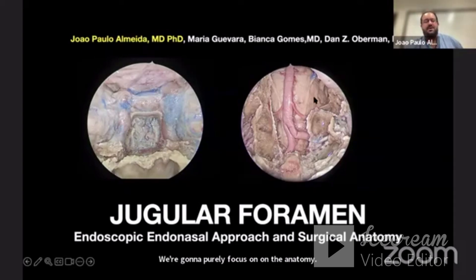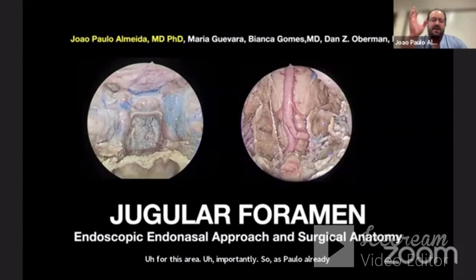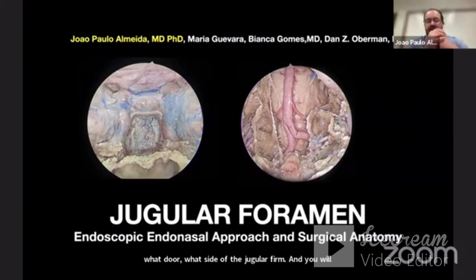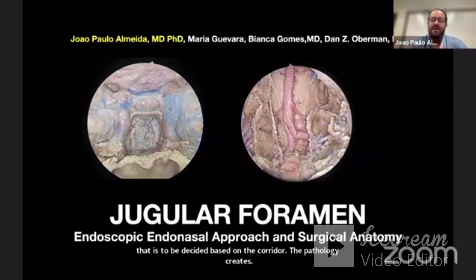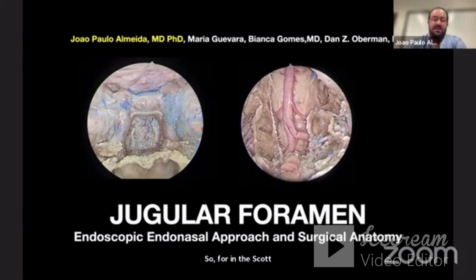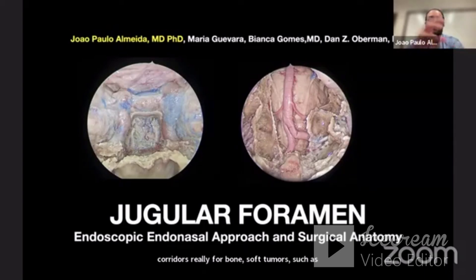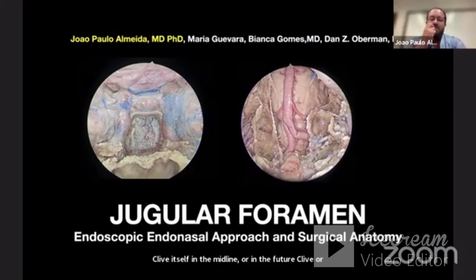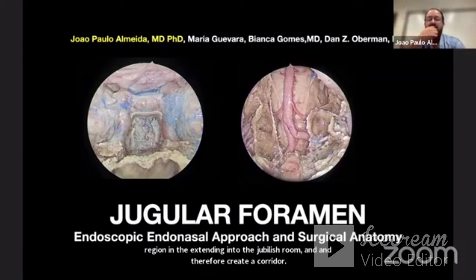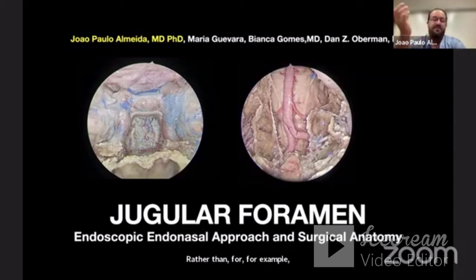I'm John Paul Almeida, open endoscopic skull base surgeon, also do brain tumor surgery and microsurgery. I'm going to be sharing some of the anatomy of this region. I want to thank Maria Guevara, Bianca Gomez, and Dan Omberman — three of my fellows that have been doing dissections to illustrate this. Today we'll purely focus on the anatomy. As Paolo already mentioned, there are different ways to approach the jugular foramen, based on which door or side you approach from, decided by the corridor the pathology creates and the neurovascular relationships. For endoscopic nasal approaches, the key indication is really for bone-soft tumors such as chordomas and chondrosarcomas, often originating at the clivus or petroclival region and extending into the jugular foramen. In my view, this is a much better approach for those cases rather than for meningiomas or schwannomas, which are better fit for open transcranial approaches.